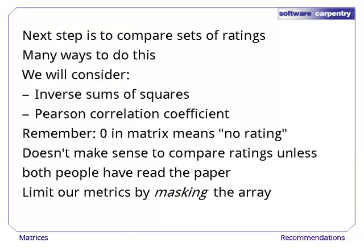Now that we have all of our data in a NumPy array, we need a metric to judge similarity. Obviously, there are dozens of similarity metrics for different classes of problems. We only consider two: the inverse sum of squares and Pearson's correlation coefficient. An important point to consider is how we treat a zero. Since a zero specifies no ranking rather than a very poor ranking, we want to use a mask on our array to define our metrics over papers that have been rated by both individuals.